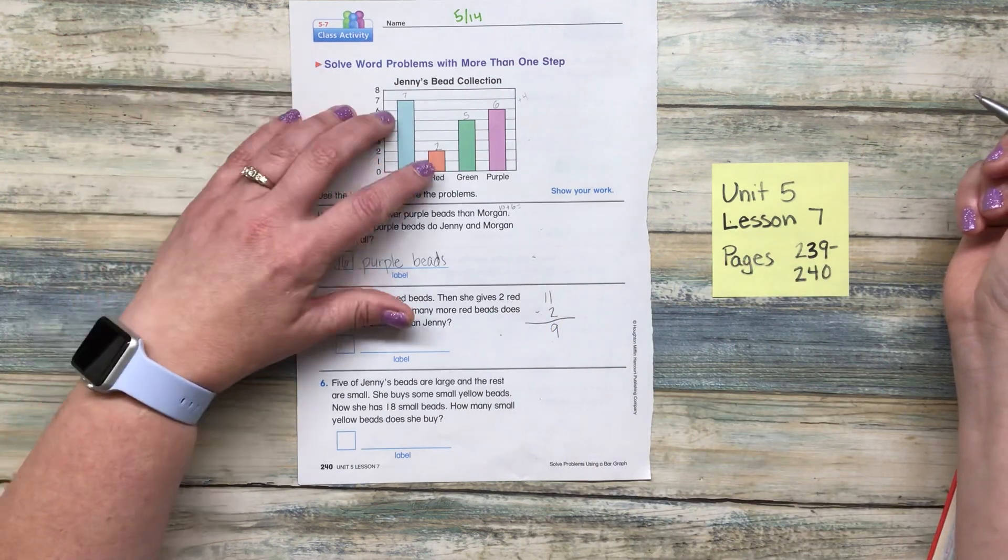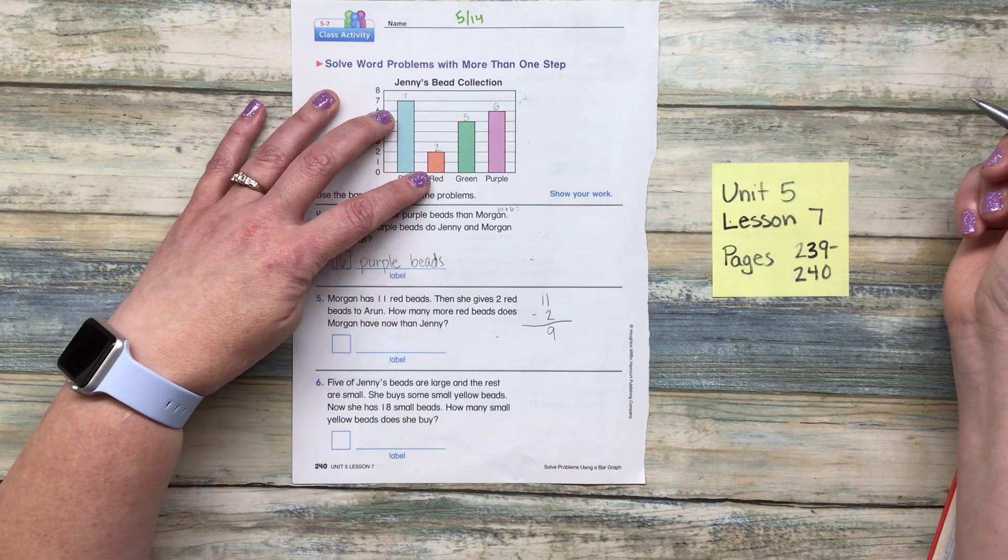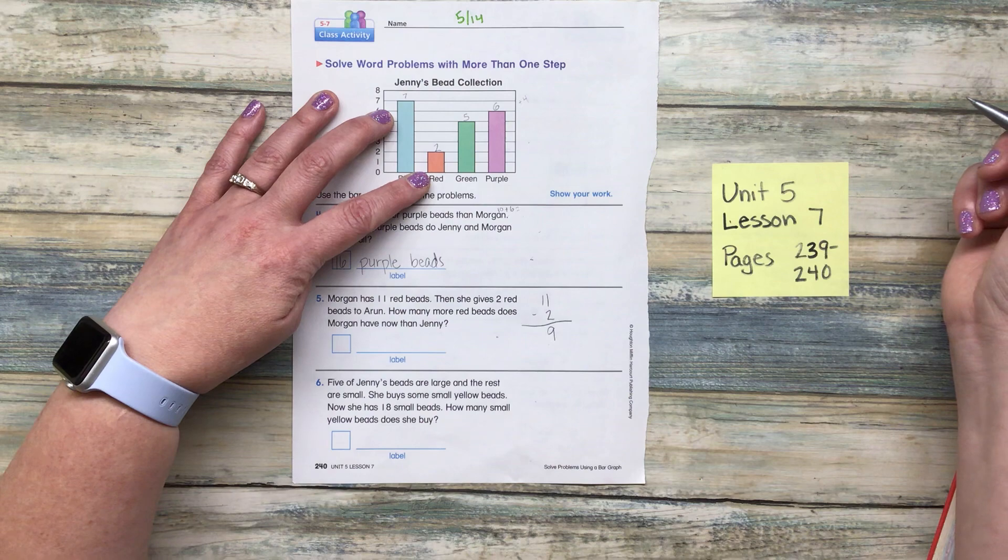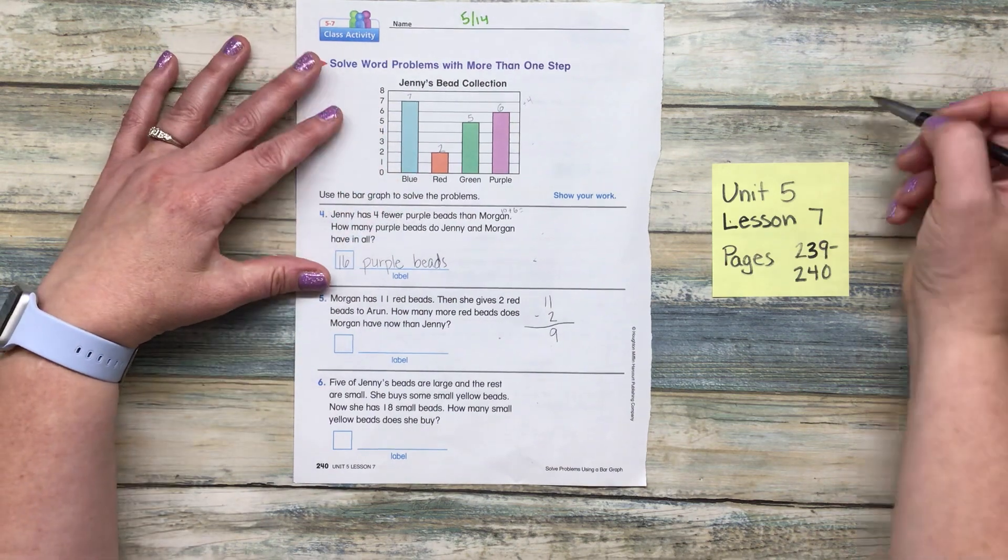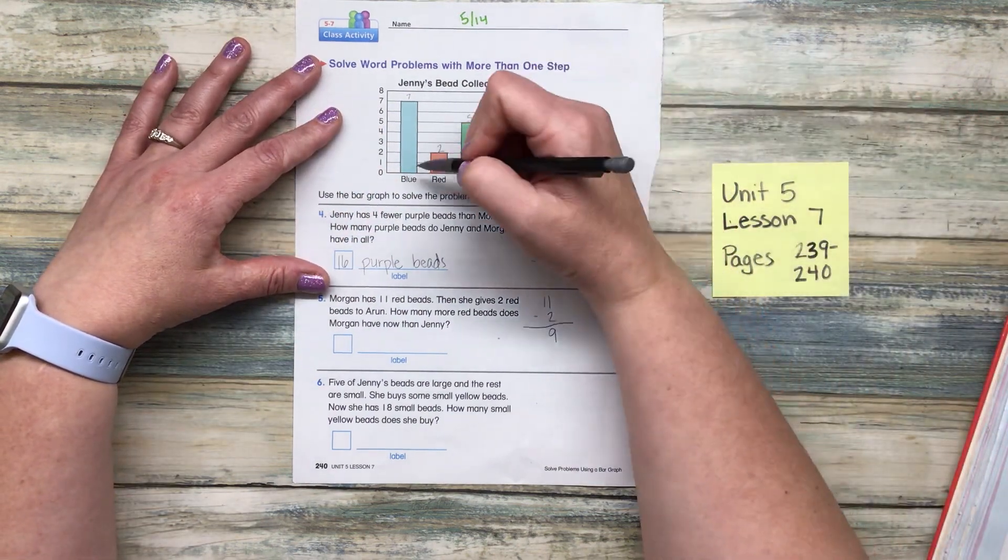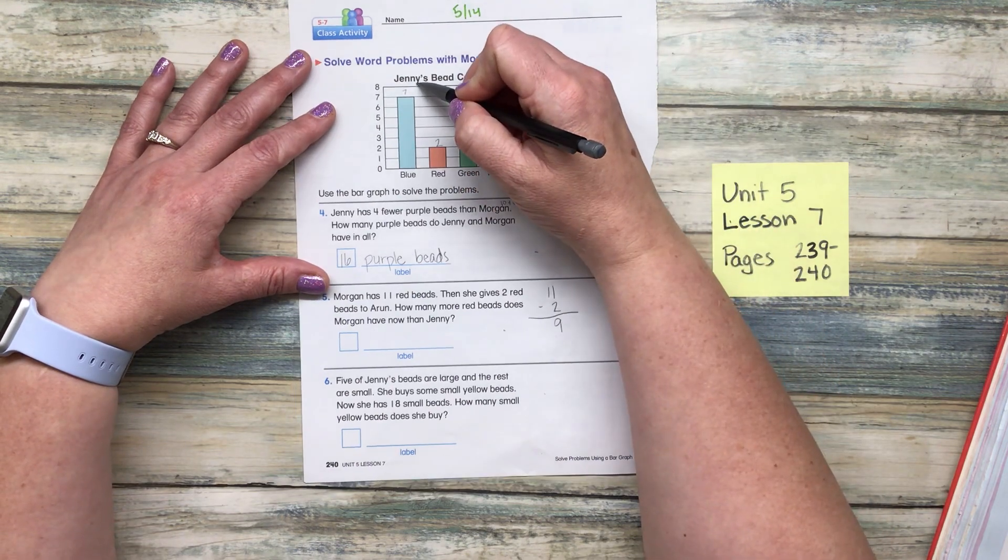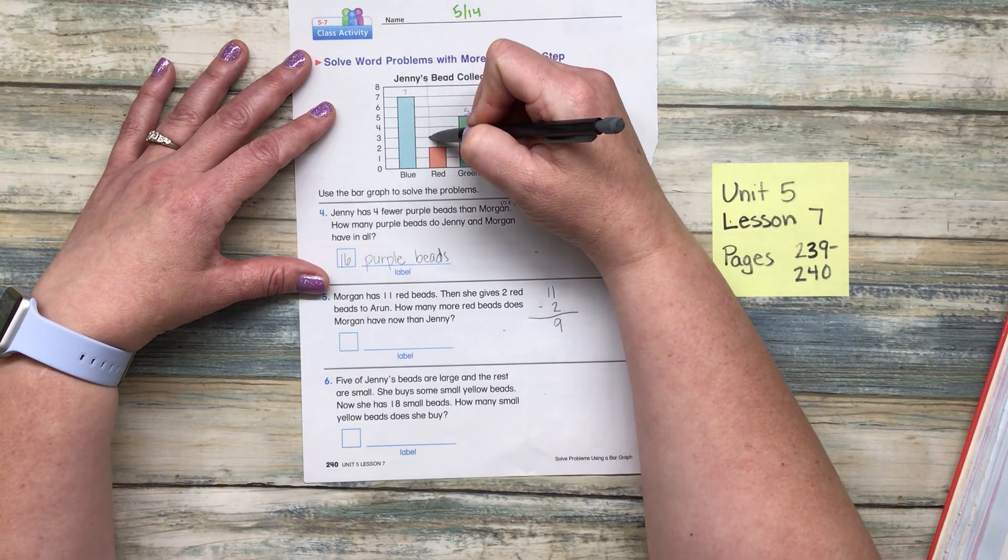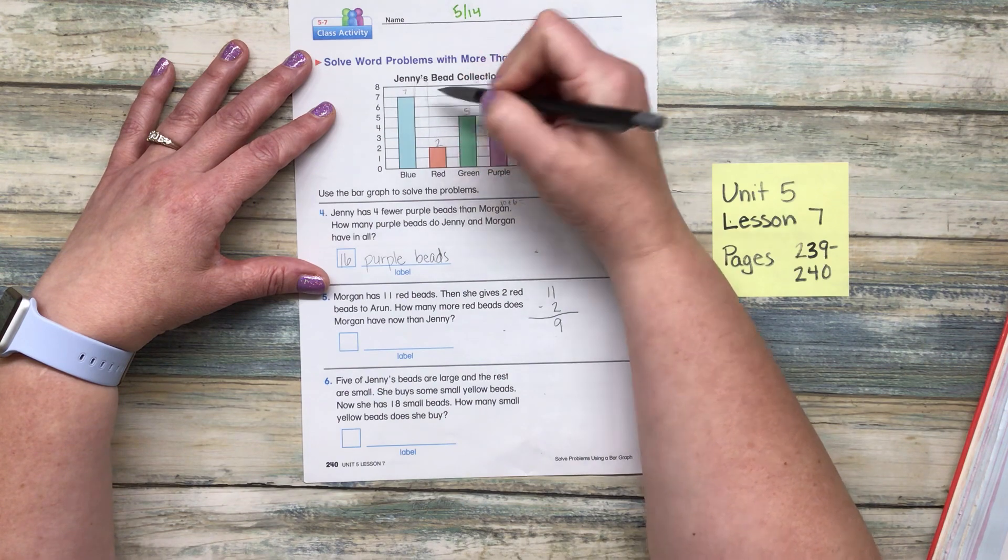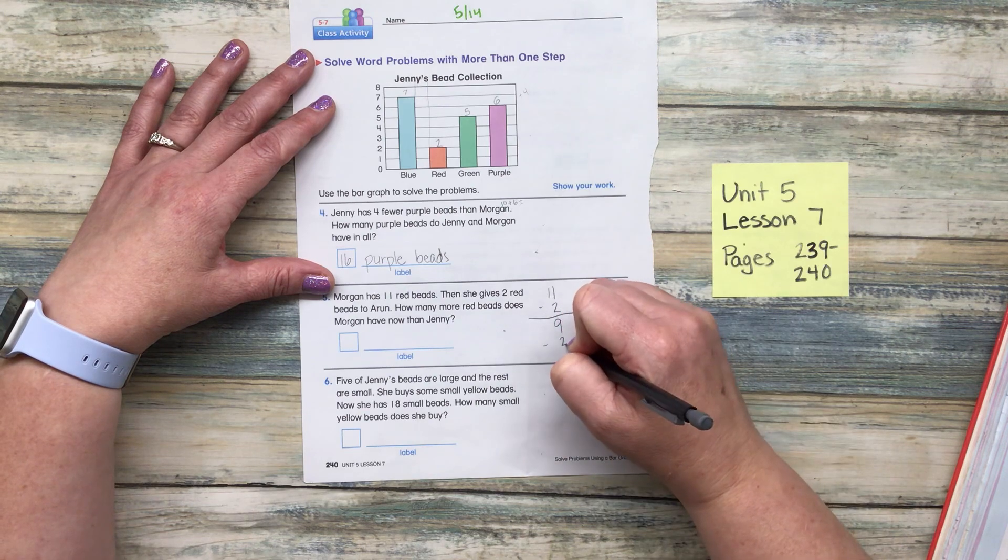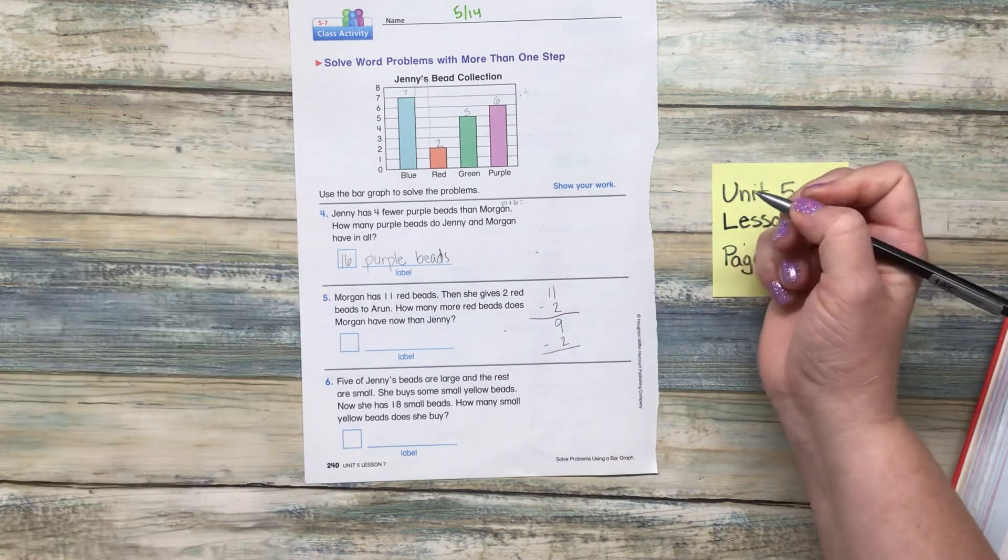So how many red beads does Jenny have? So Morgan has nine red beads. So Morgan's red beads would be all the way up here. So how many more red beads does Morgan have? We can count them or we can subtract them. It's up to you.